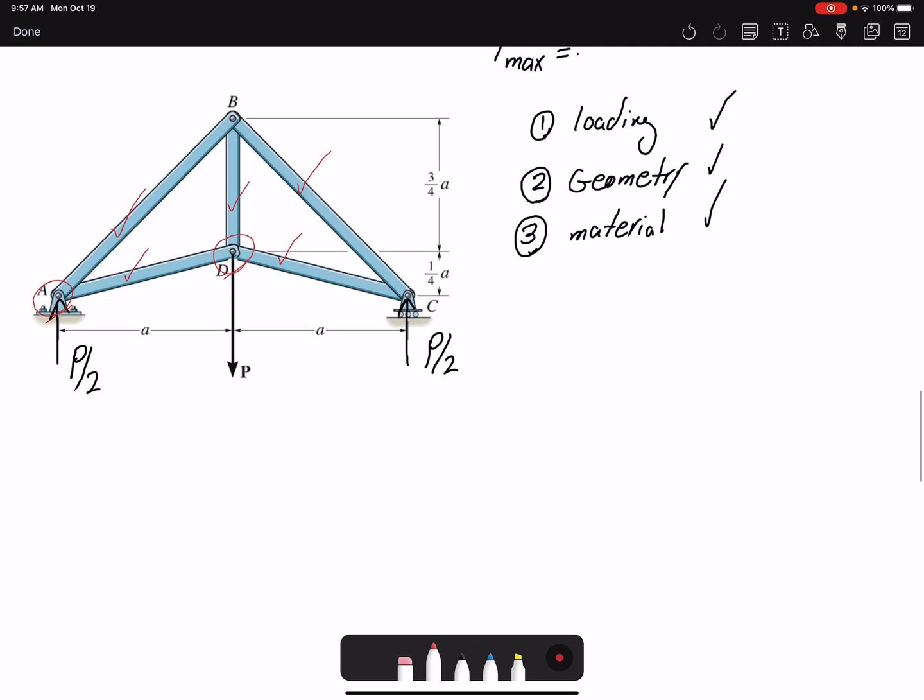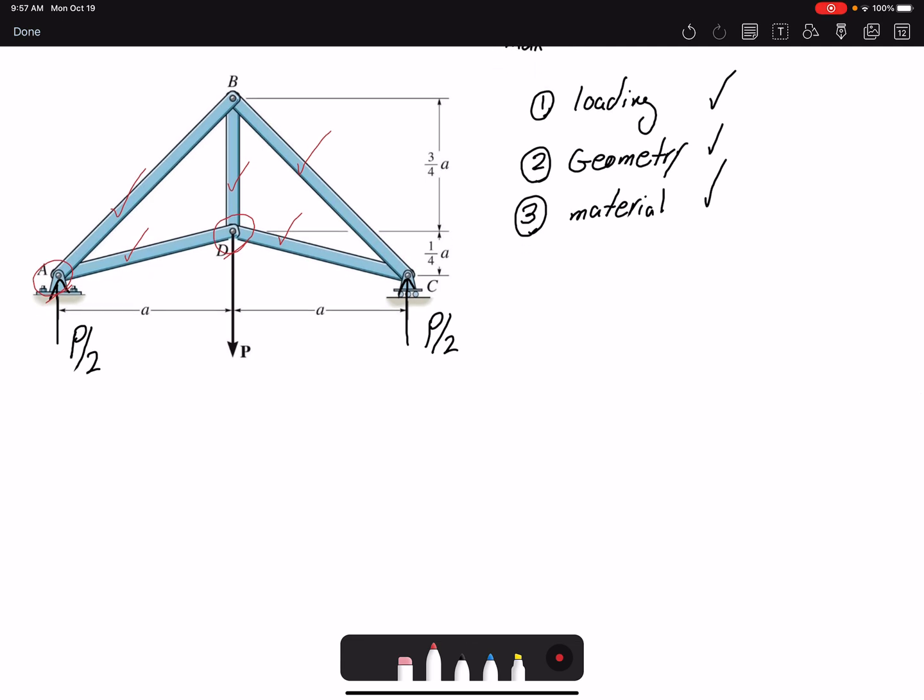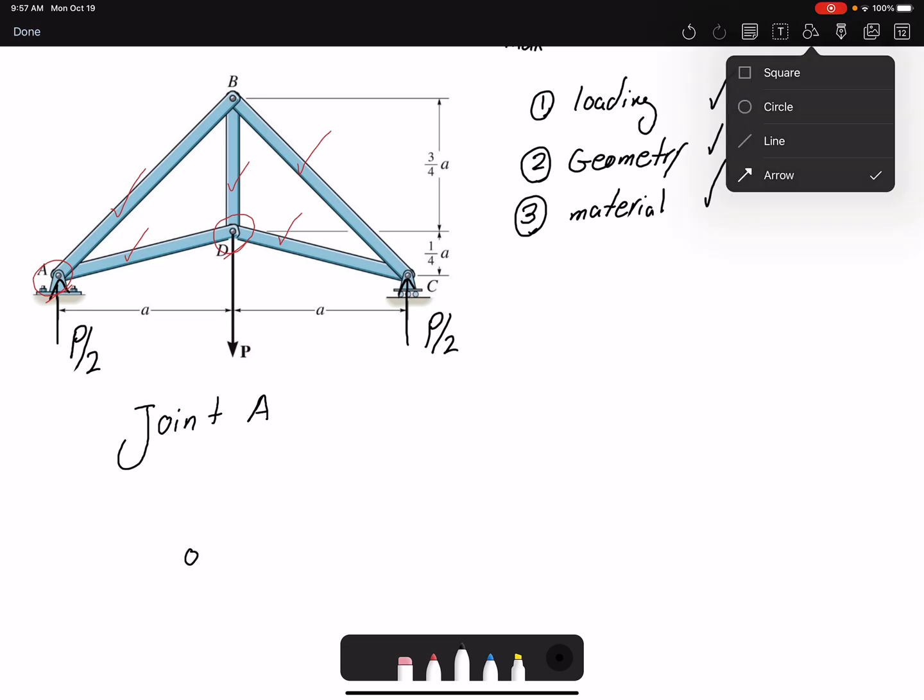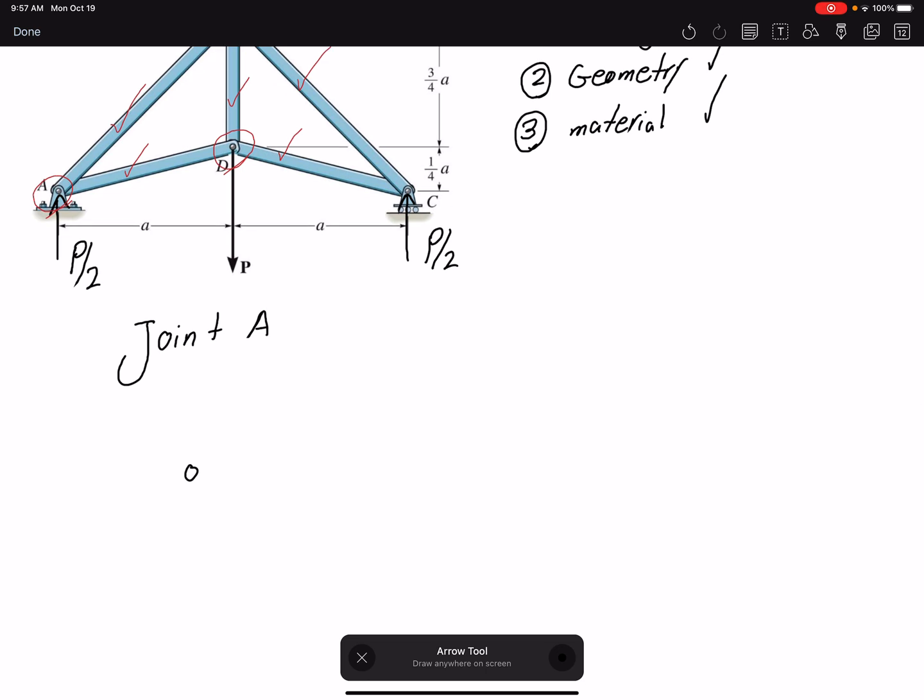Let's start analyzing joint A. I need to draw a free body diagram for joint A. I know the reaction force is upward, so that's P/2. I have the direction and the magnitude. Then I have my force FBA that could be in this direction or the other direction. To cancel it, it has to be in this direction. Then I have a force FAD that would be in the opposite direction, and they would cancel each other's X component.